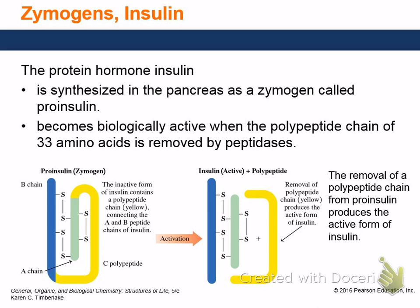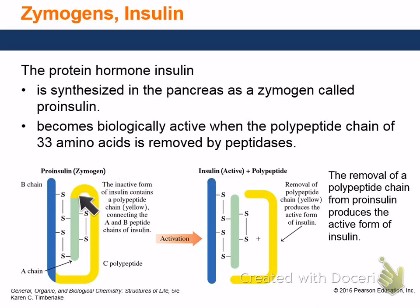Another example is insulin. The pro-insulin — the zymogen — gets segments cut out of it to produce the active insulin molecule.